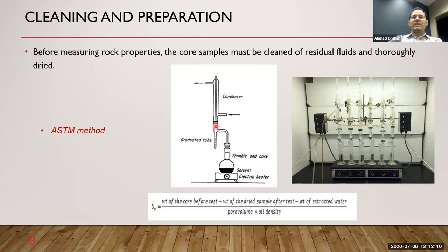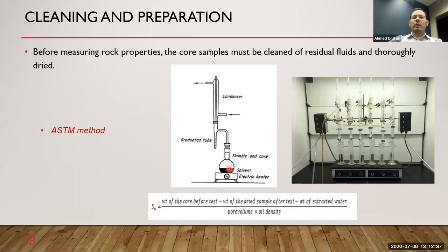One method is the Dean Stark method. This picture shows an actual Dean Stark apparatus and a schematic of it. It has a flask where we place our core sample, we add our solvent (toluene), and there is a condenser connected to cold water to condense any vapor.